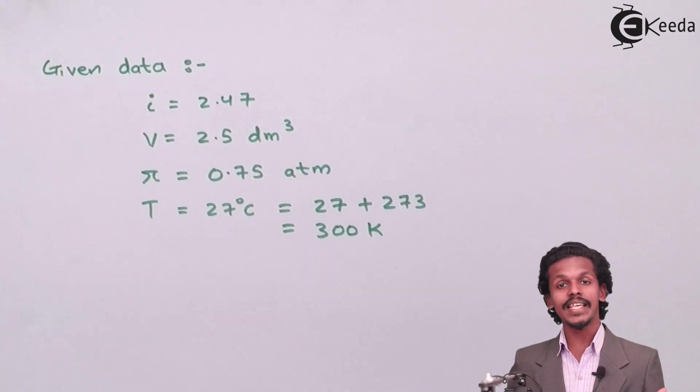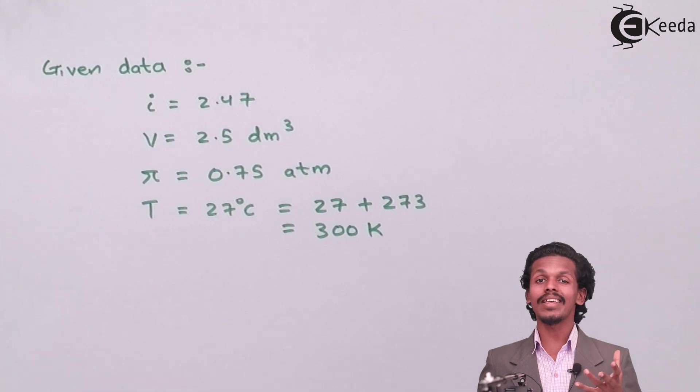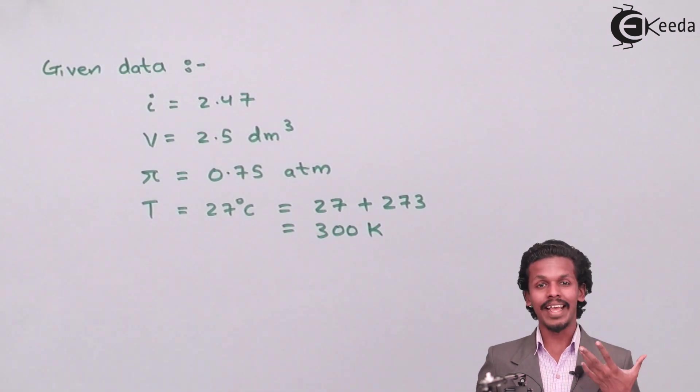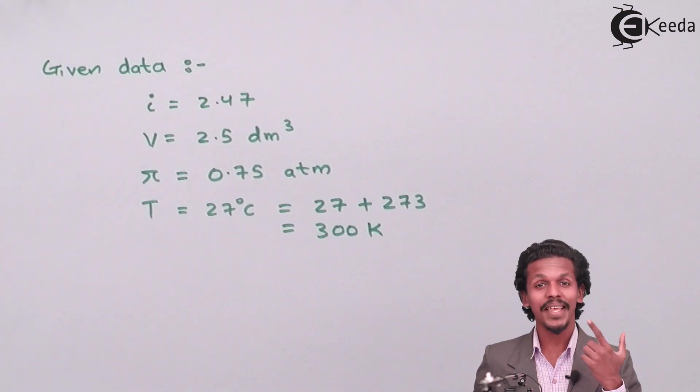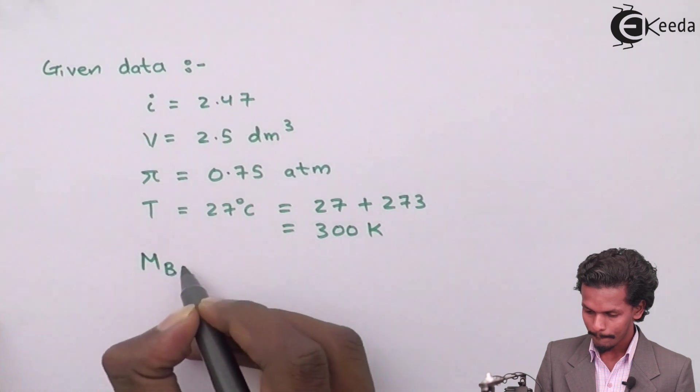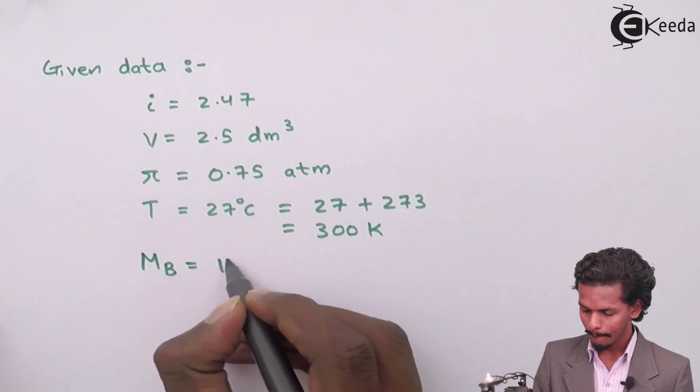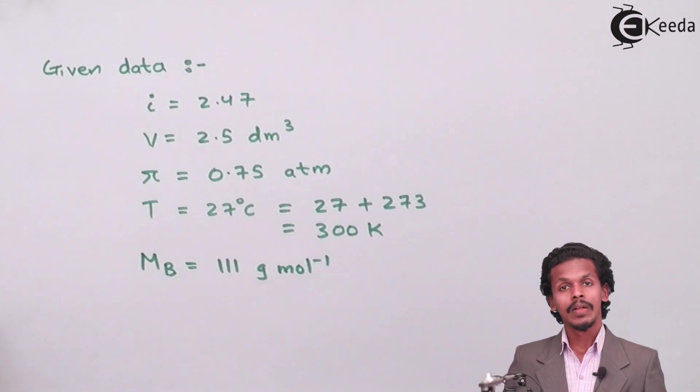We will add the given temperature plus 273 which will make around 300 Kelvin. And moreover the molar mass of CaCl2, in this case we should know that the CaCl2 is the solute and hence the molar mass of the solute is denoted by MB,